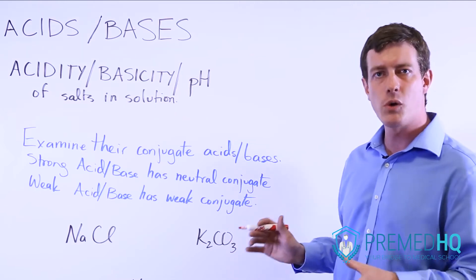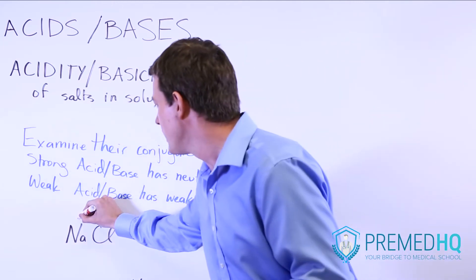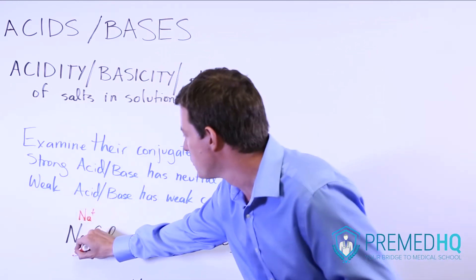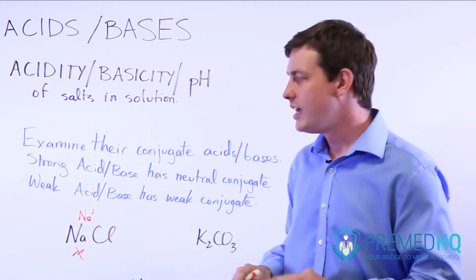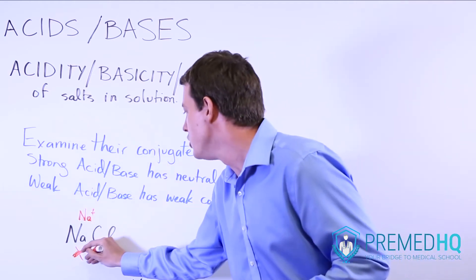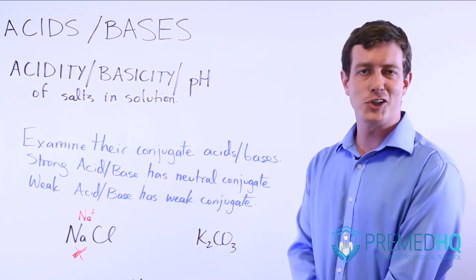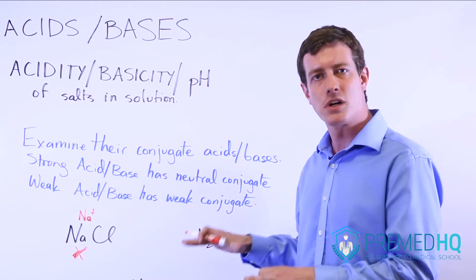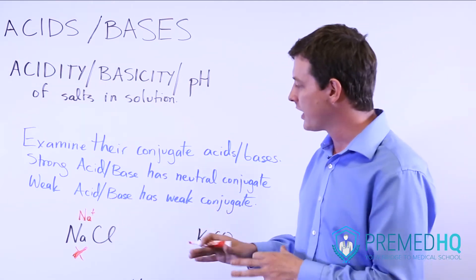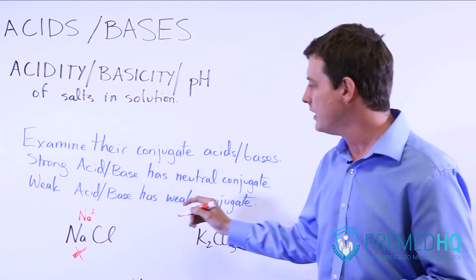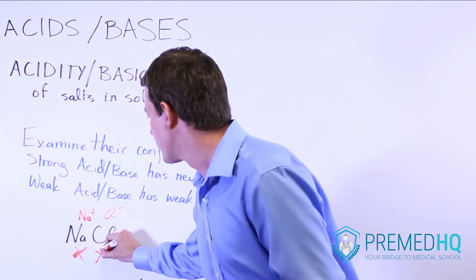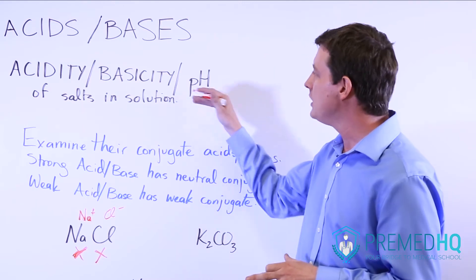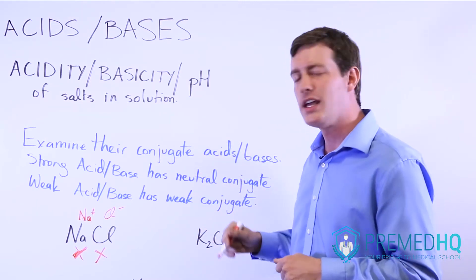Sodium should look familiar because Na⁺ is the conjugate acid of NaOH, sodium hydroxide. This will be completely useless as an acid because NaOH is a strong base — Na⁺ is a totally neutral species. Cl⁻ is the conjugate base of HCl, and because HCl is one of the strong acids, its conjugate base will be totally neutral with no real base ability. So what we have are two neutral compounds, and that will give us a pH of around seven — a fairly neutral pH when you put NaCl into solution.